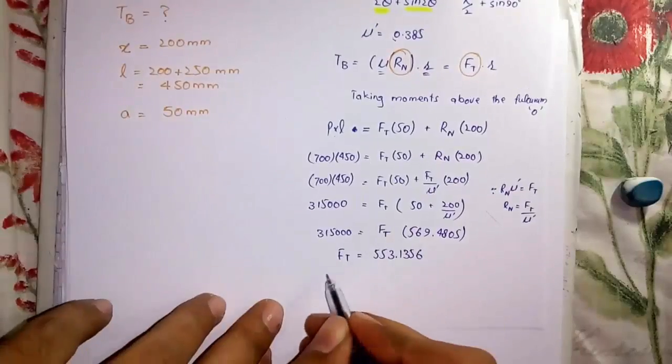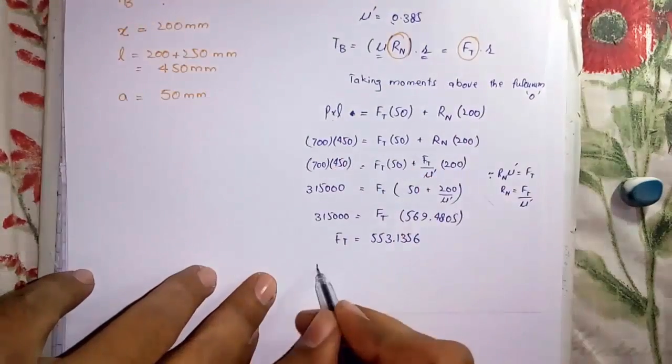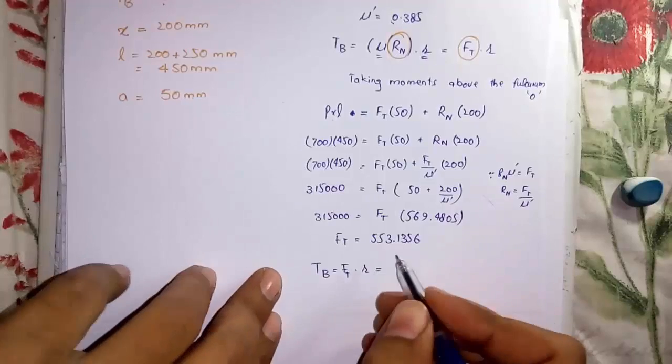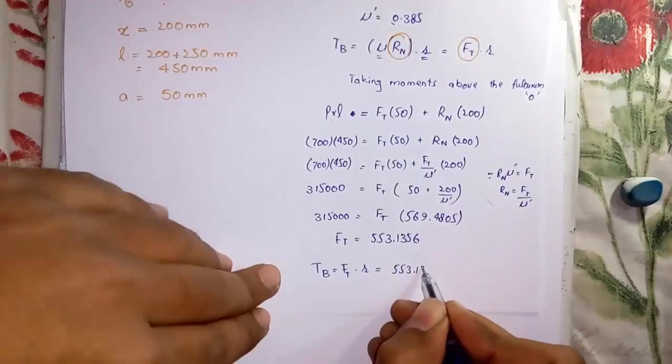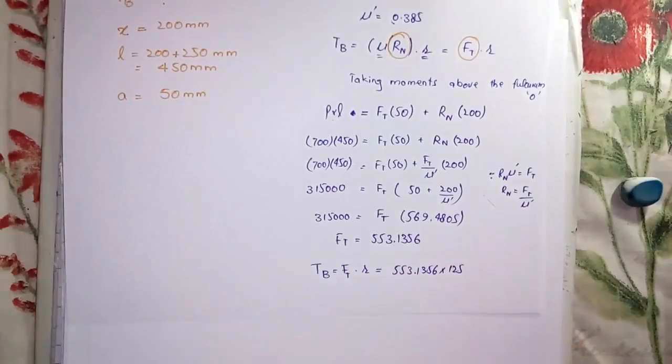Now we have the value of FT. Substitute it in the formula, and in this way we find out TB, which was asked in the question.